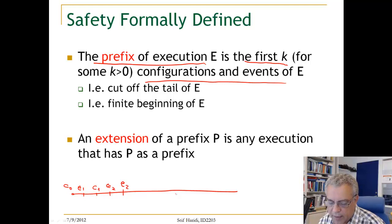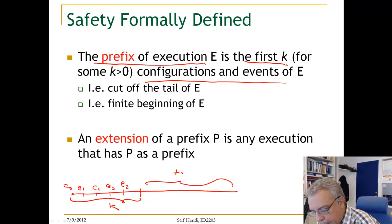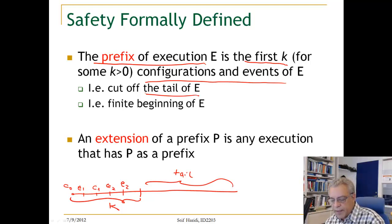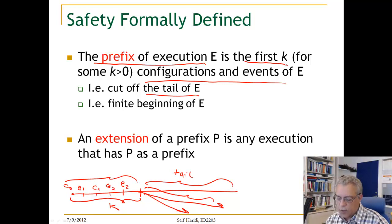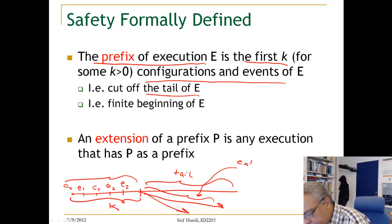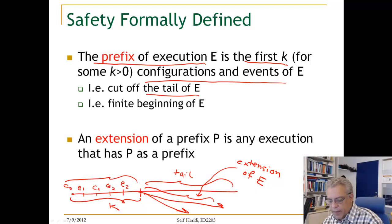We can always abstract away configurations and just talk about events. If we take the initial segment of an execution, that is what we call a prefix — we cut off the tail and just take a finite beginning. An extension of a prefix P is any execution that has P as a prefix. So if we have a prefix and we extend it in any way, that extended part is called the extension of the execution.